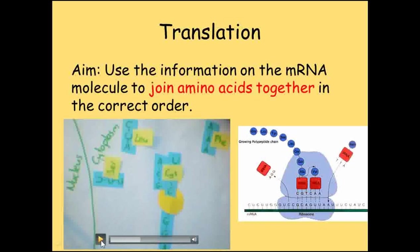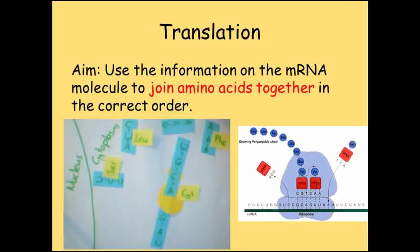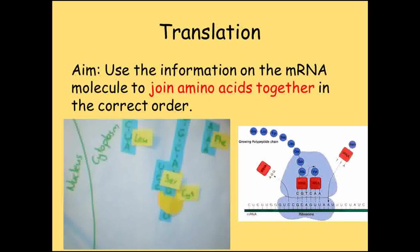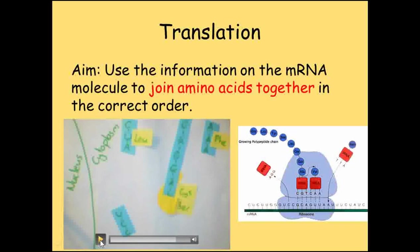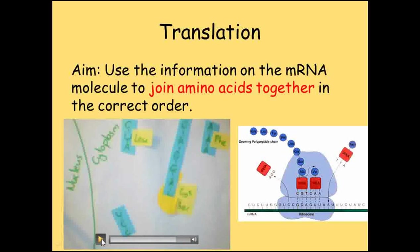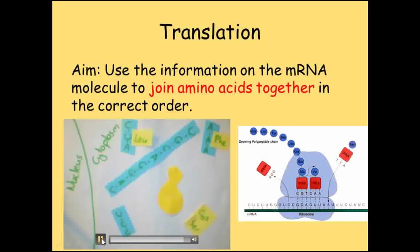The ribosome joins this amino acid to the growing chain and the process continues with the next three bases. Each codon on the mRNA attaches to the correct tRNA molecule that is transferring the relevant amino acid for the ribosome to attach. The amino acids form a long chain until the last one has been attached, when the ribosome releases the chain for it to fold up into its particular shape and start doing its job.